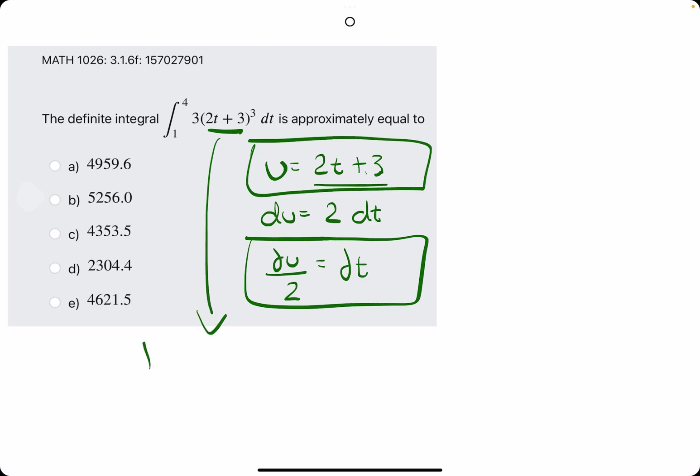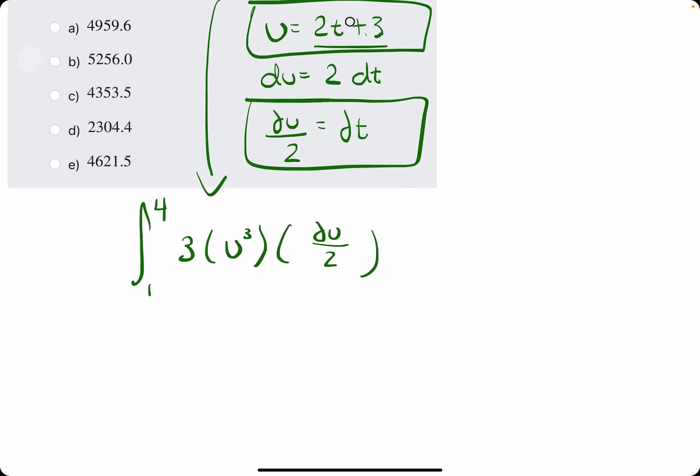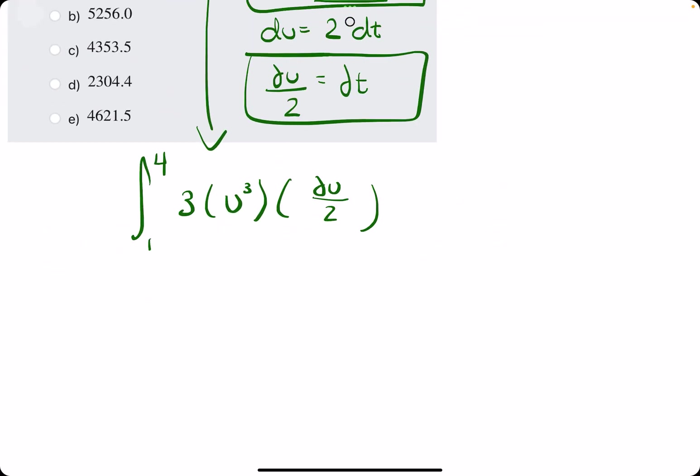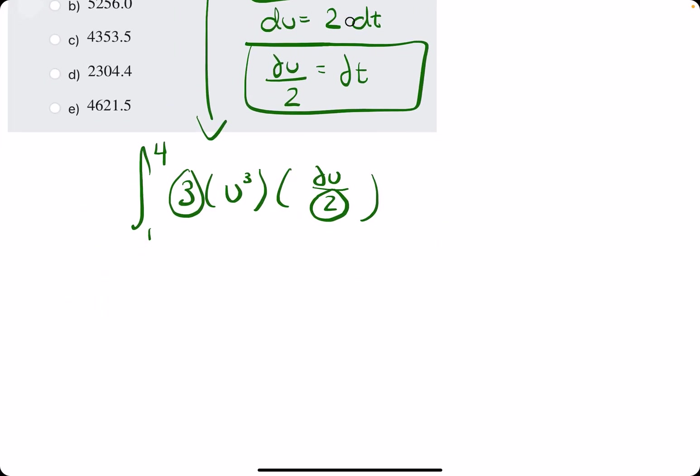And then, we rewrite the integral from 1 to 4. Keep the 3. 2T + 3 is our U. And then, that U is being cubed. And then, we replace the DT with DU over 2. Now, if there were T's here, we would cancel them out. But, that's kind of a free pass. We've already, you know, eliminated all the T's. There's no T's to cancel. So, we gather coefficients out in front. 3 over 2. Leave the integral from 1 to 4. U³ DU.